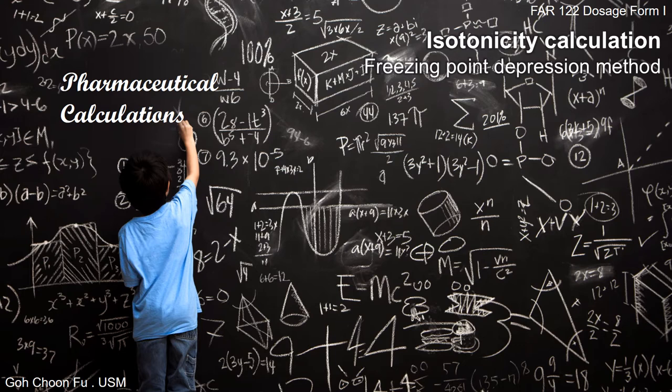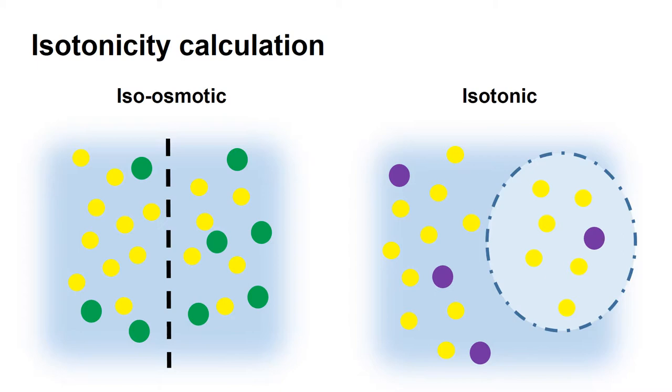Welcome to the sixth part of the pharmaceutical calculations. In this lecture, together with the few coming lectures, we'll be discussing isotonicity calculations. This calculation is important for parenteral and ophthalmic products which will be covered in FAR 222, but you have to learn the calculations in this course. In this short lecture, I'll be discussing mainly on the first isotonic calculation method, which is freezing point depression method.